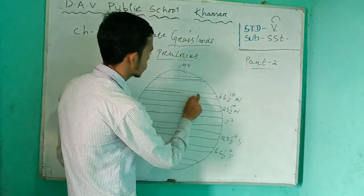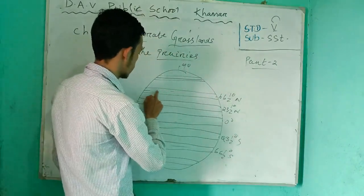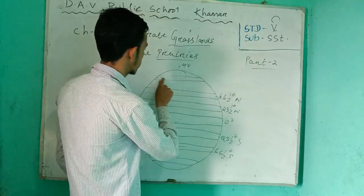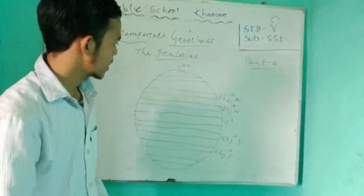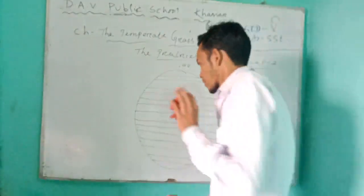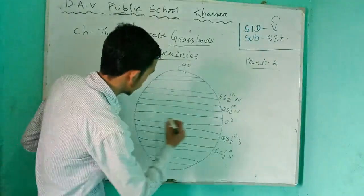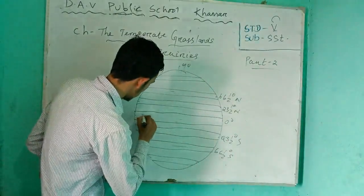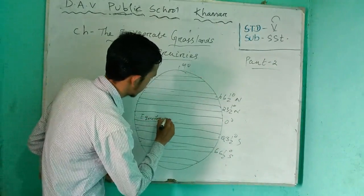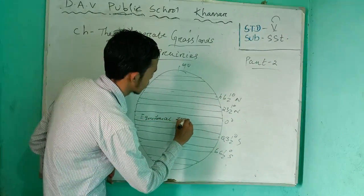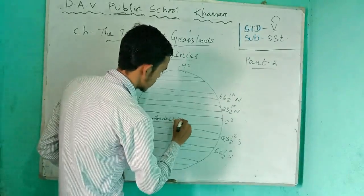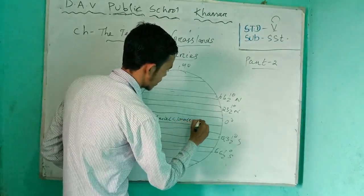I am saying where is actually the temperate zone located — which part is the temperate zone? So this is zero degrees, which is called the equatorial zone — the equatorial climate zone.